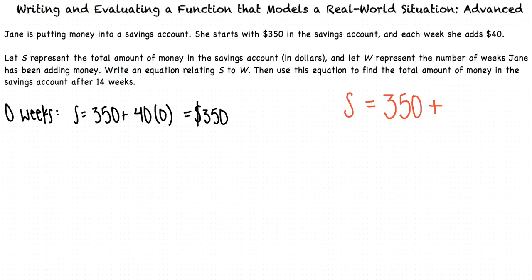After one week, the total amount of money will be S equals 350 plus 40 times one, because she will have put one weekly deposit of $40 in. When we simplify this, we see that S equals 390.